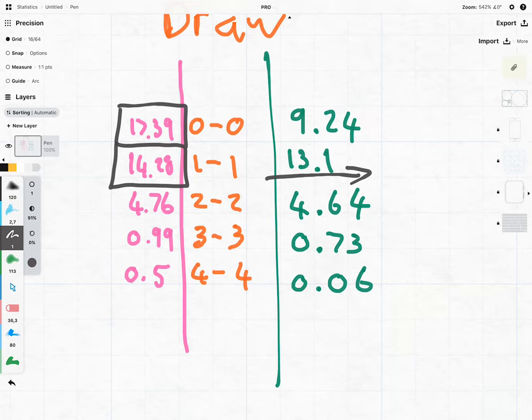But look how close our odds were for a 2-2 draw. I mean, this model is not considering, like I said, any of the players' form, anything like that, other than their results in this World Cup. And look how close that is, 4.64 to 4.76.